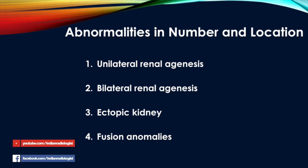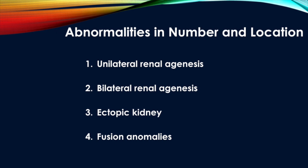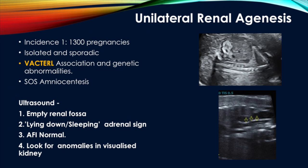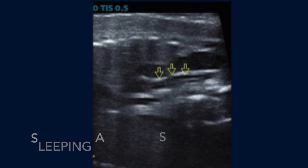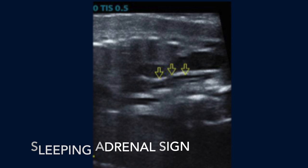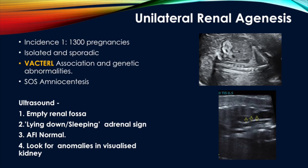Abnormalities in the number and location of kidneys include unilateral renal agenesis, bilateral renal agenesis, ectopic kidney, and fusion anomalies. The sonographic finding in unilateral renal agenesis is an empty renal fossa with a lying-down or sleeping adrenal sign — an elongated adrenal in the renal fossa — while the other kidney is seen and is normal. The AFI can be normal. We should look for anomalies of the present kidney, since renal agenesis is associated with VACTERL anomalies; thorough evaluation of the vertebral, spinal, cardiac, and GI systems is required.